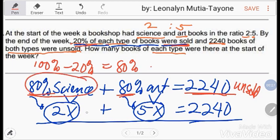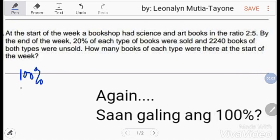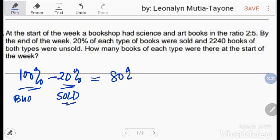Bakit 80%? Kasi 100% minus 20% equals 80% of each. So, 80% ng science, 80% ng art. At si science, sa ratio, 2x at yung isa ay 5x. Galing ang 100%. Yan yung kabuuhan. Tapos, mag-deduct tayo ng 20% kasi ito yung na-sold na. Tsaka ito yung kabuuhan, yung buo. Tapos, na-sold na. So, yung 80% yan yung unsold.